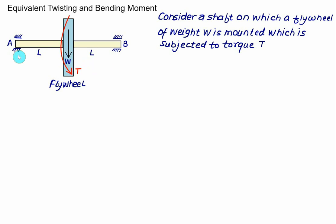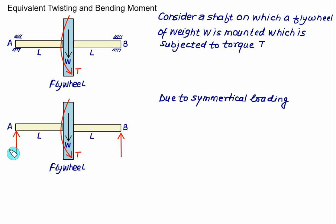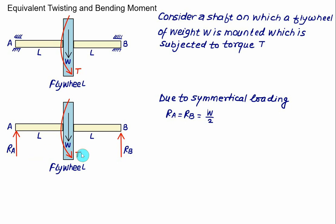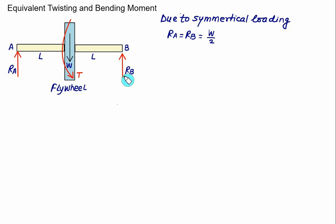The weight is equally divided between the two reactions at A and B. Due to symmetrical loading, the reaction at A equals RA and the reaction at B equals RB, and both RA and RB are equal to W divided by 2.